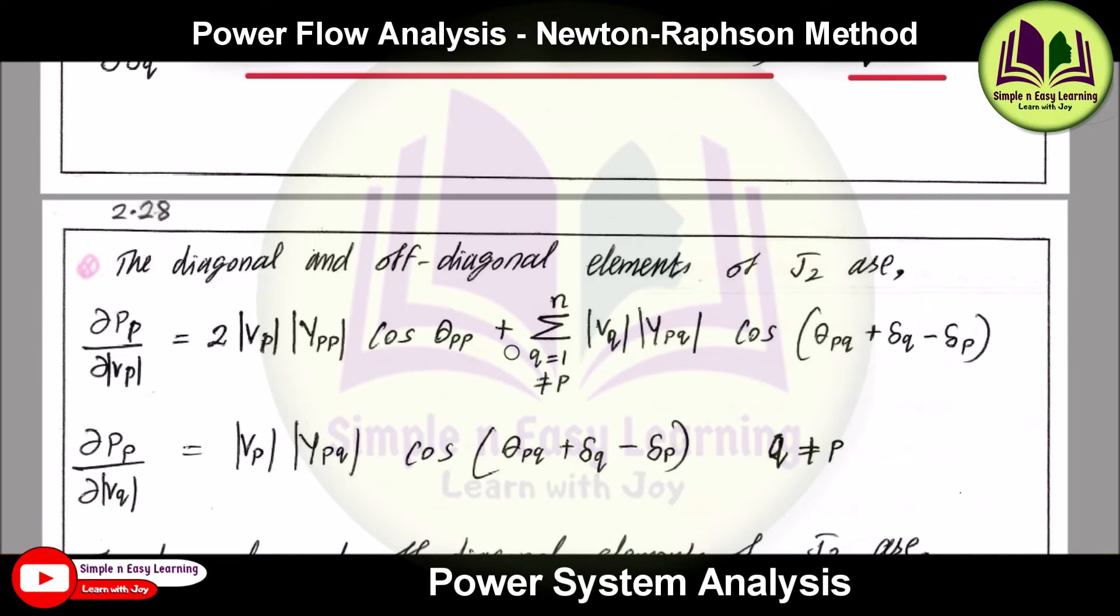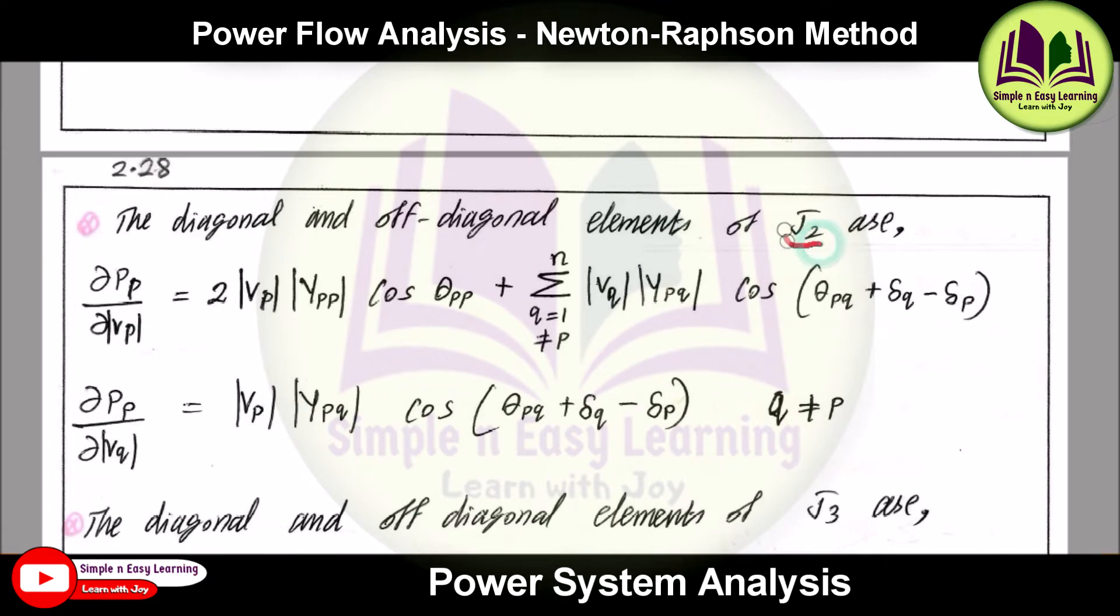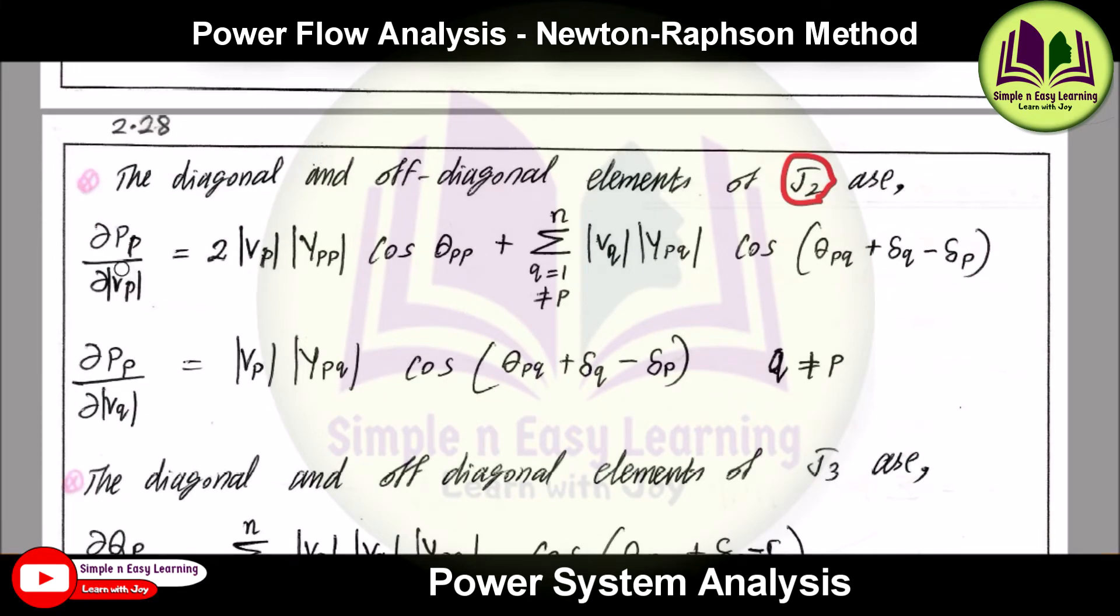Similarly, the second term J2: for J2 there will be these two formulas, ∂Pp/∂Vp and ∂Pp/∂Vq.